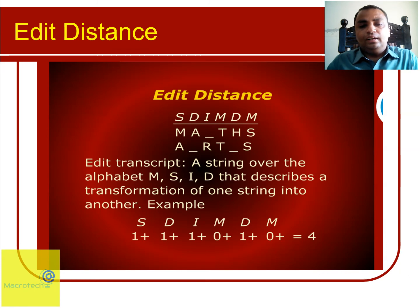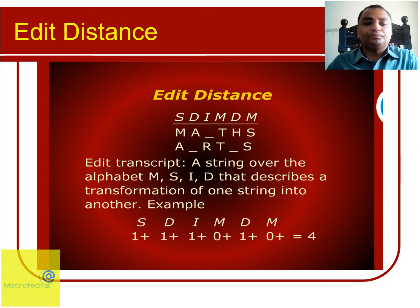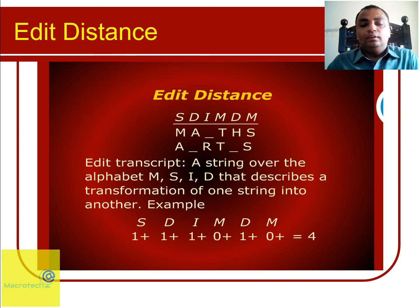Basically, the edit distance problem — as we said — is that we have to change one string into another string. The operations we have to perform are: substitution, deletion, and insertion. There is also a match operation, and each operation has a cost — a cost function that we have to consider when changing sections.